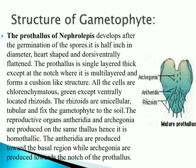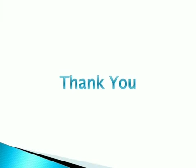The reproductive organs — antheridia and archegonia — are produced on the same thallus, hence it is a homothallic structure. Antheridia are produced toward the basal region, while archegonia are produced toward the notch of the prothallus. This is about the structure of the gametophyte.